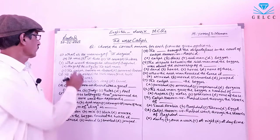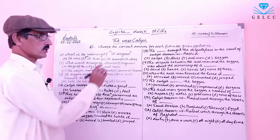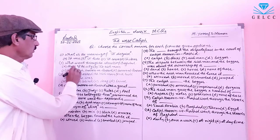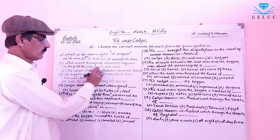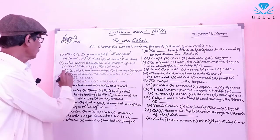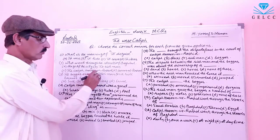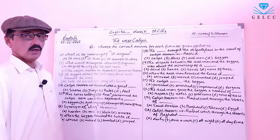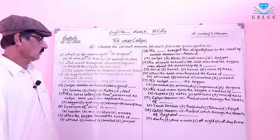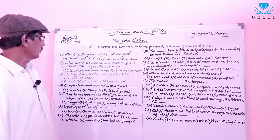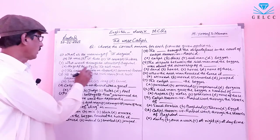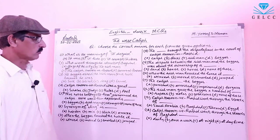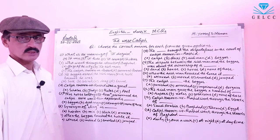Statement number 2: Who went through the streets of Baghdad? Option A: Kazi of the city. B: The rich man. C: The Caliph Harun al-Rashid. D: Harun al-Rashid. The correct answer is C — The Caliph Harun al-Rashid went through the streets of Baghdad.